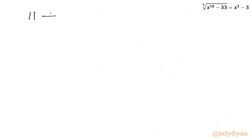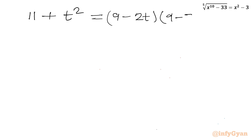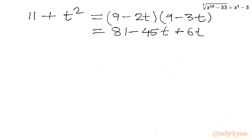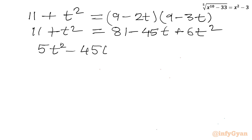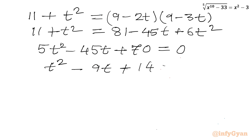Expanding the right-hand side: (9 minus 2t)(9 minus 3t) = 81 minus 27t minus 18t plus 6t squared = 81 minus 45t plus 6t squared. So we get: 11 plus t squared equals 81 minus 45t plus 6t squared. Taking all terms to the right: 5t squared minus 45t plus 70 equals 0. Dividing by 5: t squared minus 9t plus 14 equals 0.